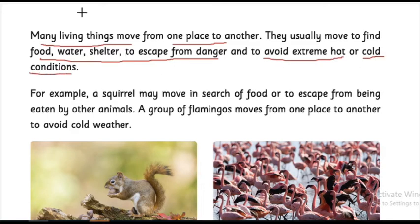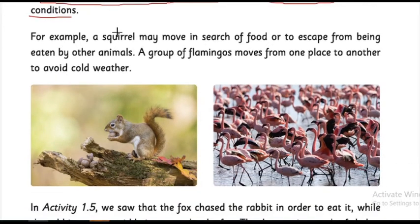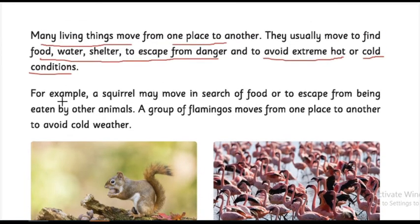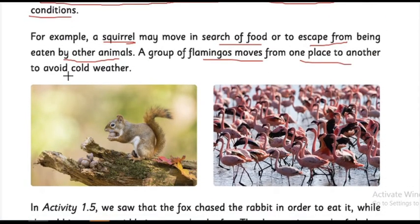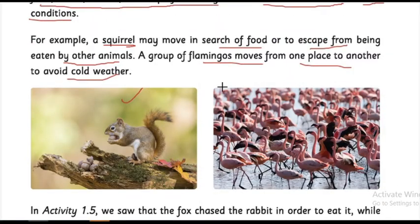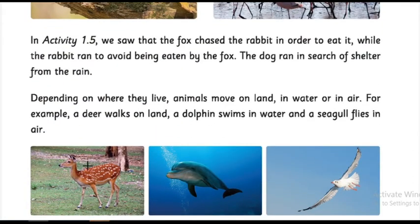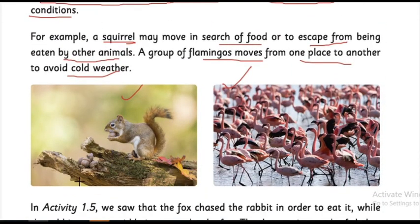For example, if I want to go somewhere to prepare or eat food, I will move from place to place using my limbs — two hands and two legs. All animals have a part in their body to make that movement. A squirrel may move in search of food or to escape from being eaten by other animals. A group of flamingos moves from place to place to avoid cold weather.